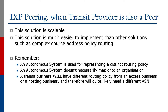Remember from the start of this BGP series that an autonomous system is used to represent a distinct routing policy — it doesn't necessarily map onto an organization. The common case is for an AS to map onto an organization, but an autonomous system is there to represent a routing policy. A transit business will have a completely different routing policy from an access business or a hosting business, and therefore will quite likely need a different ASN. In fact, quite a lot of medium to large providers will have a different ASN for the different functions they operate.